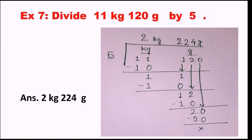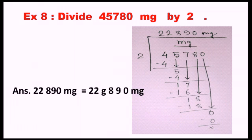Example eight: divide 45780 milligram by 2. It is only in milligram, so you can divide it normally. Check my division. After dividing, you can convert the result if required. If the question asks you to convert to gram and milligram, then convert; otherwise you can leave it as 22890 milligram. If it is mandatory to convert to gram and milligram, do so. In this way we can solve addition, subtraction, multiplication, and division on mass.